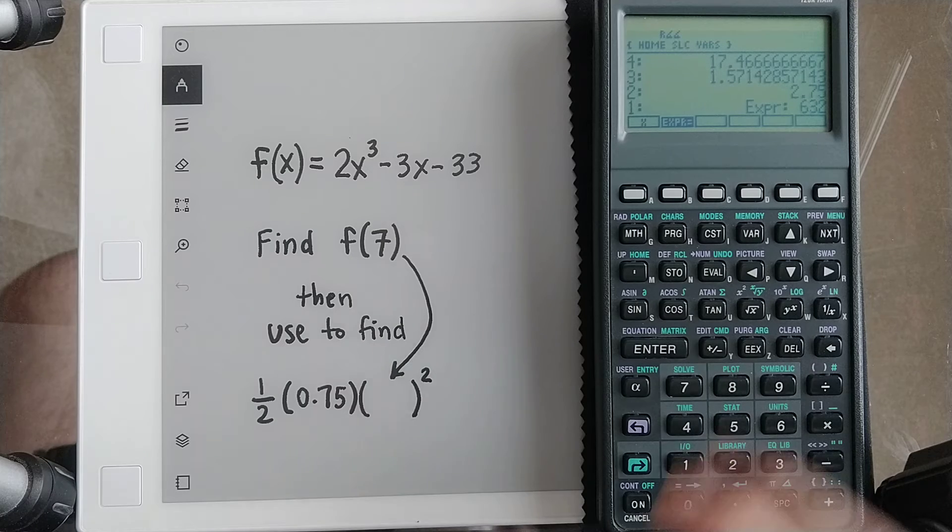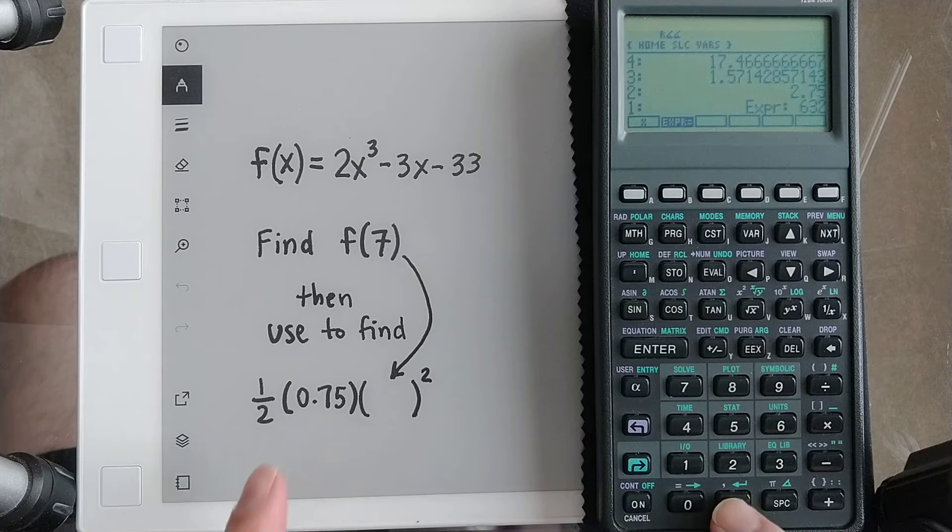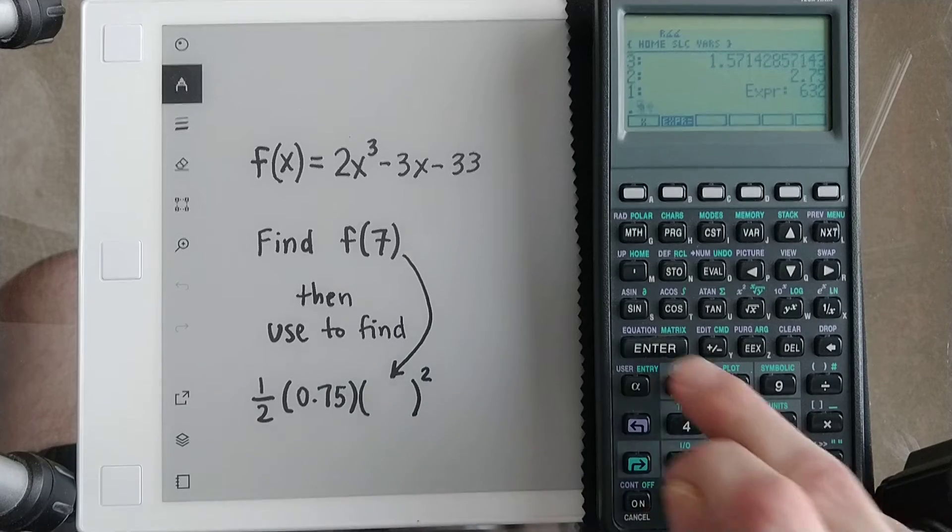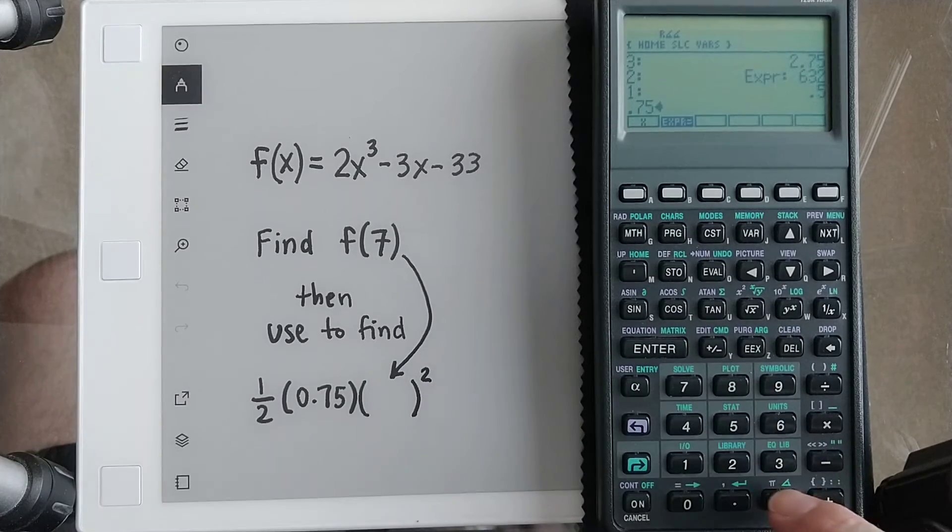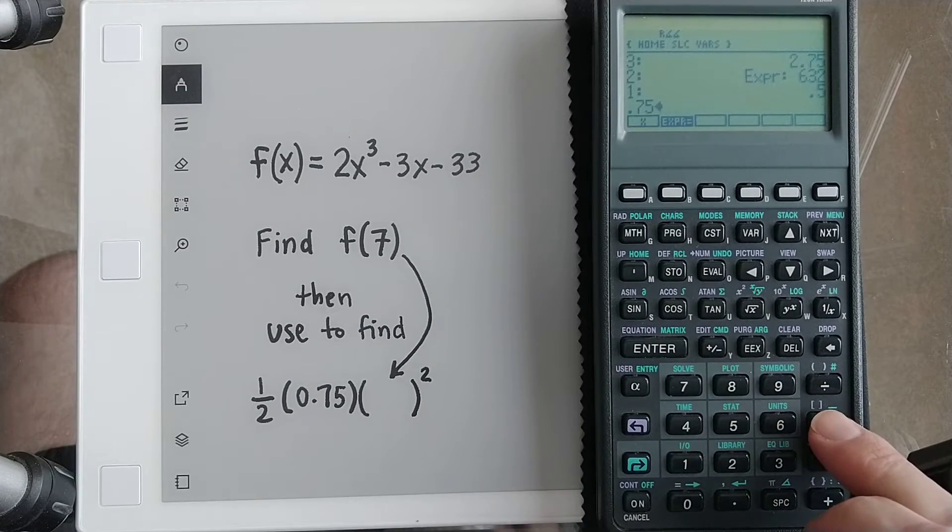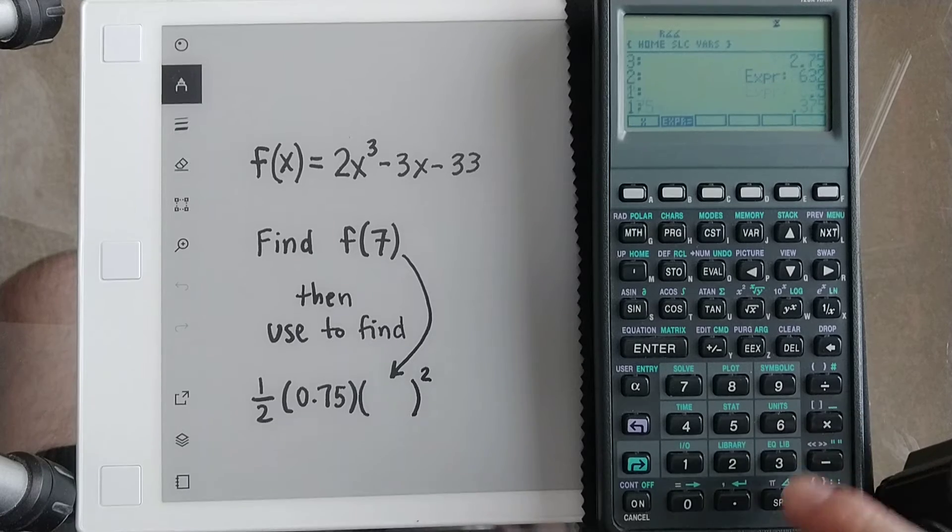Well, isn't that nice? Now, to use that number in this calculation here, I can do 1 half, 0.75, multiply those together. Actually, if I was smart, I would have squared it first, but I'll show you.